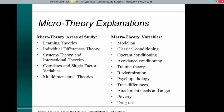Micro-theory areas of study include learning theories, individual differences theory, systems theory and interactional theories, correlates and single-factor variables, and multidimensional theories. Micro-theory variables include modeling, classical conditioning, operant conditioning, avoidance conditioning, trauma theory, revictimization, psychopathology, trait differences, attachment needs and anger, poverty, and drug use.